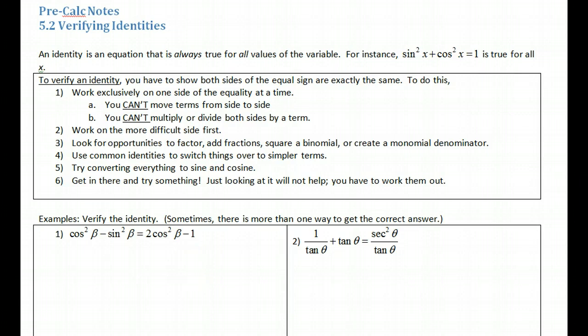Hi, this is PreCalc Notes, 5.2 Verifying Identities. An identity, as we noted last time, is an equation that is always true for all values of the variable. For instance, sine squared plus cosine squared equals 1. That's true for all x. To verify an identity, you have to show both sides of the equal sign are exactly the same.